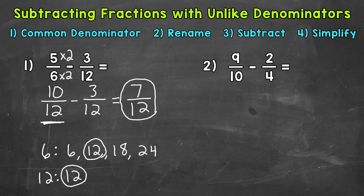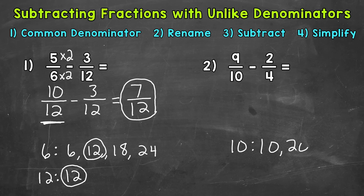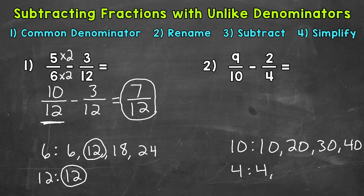Let's move on to number 2, where we have 9 tenths minus 2 fourths. The first thing we need to do is find a common denominator — the least common multiple between 10 and 4. Let's write out some multiples. The first 4 multiples of 10 are 10, 20, 30, 40. The first 4 multiples of 4 are 4, 8, 12, 16. Writing out 4 multiples for each, we don't have a match, so we need to extend our lists.